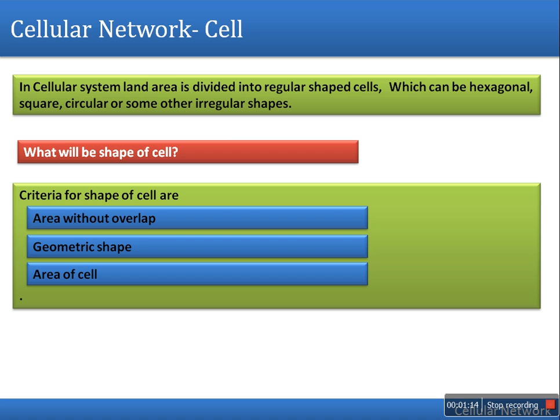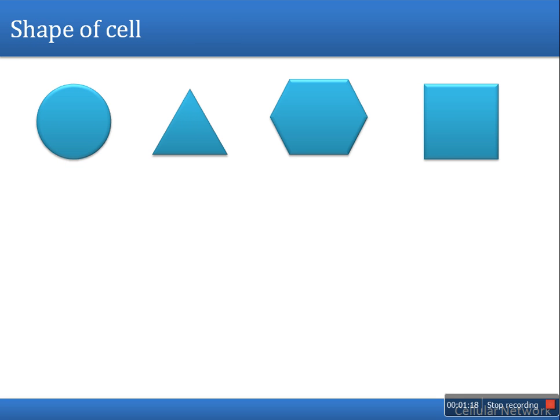Let's consider these four geometric shapes. All four are satisfying the geometric shape condition. Now we will see area overlap. If we are going to use a circle, we have to overlap cells in order to cover the entire area, so there will be overlapping. In that case, circle cannot be used for the shape of a cell.